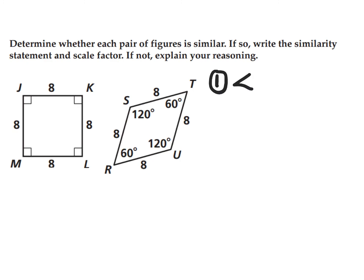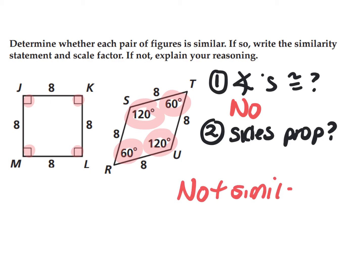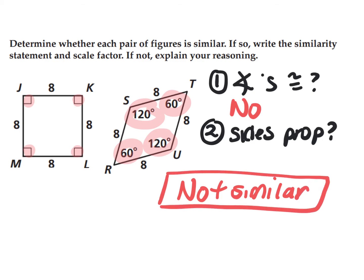In this problem, I need to check are the angles congruent and are the sides proportional. Looking at the angles, the first figure has right angles and the next one has 120 and 60 degree angles. None of these are the same, so the angles are not congruent. Therefore the polygons are not similar. It doesn't matter if the sides happen to be proportional — all that matters is that the angles are not congruent.